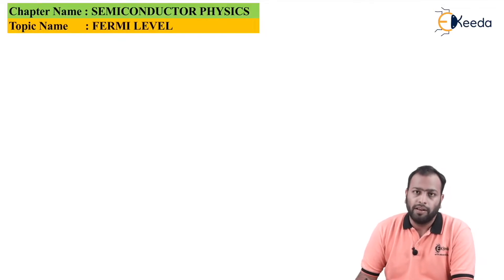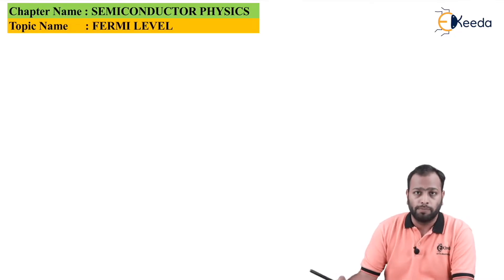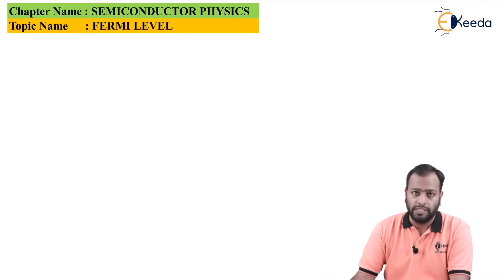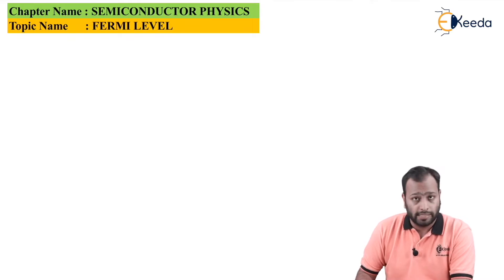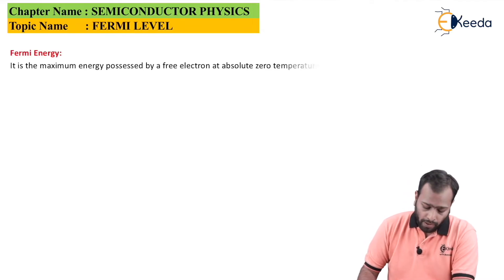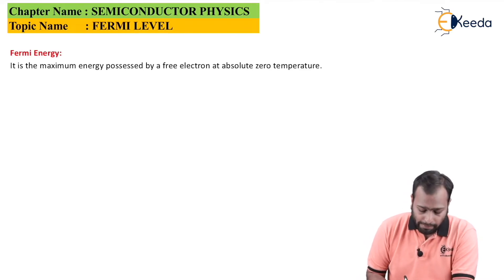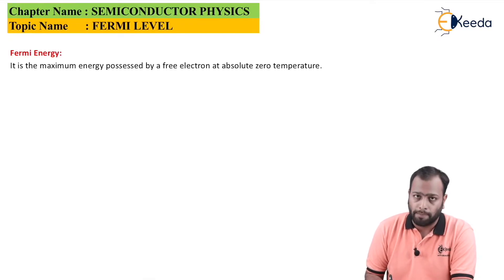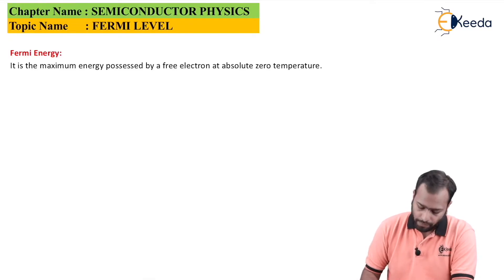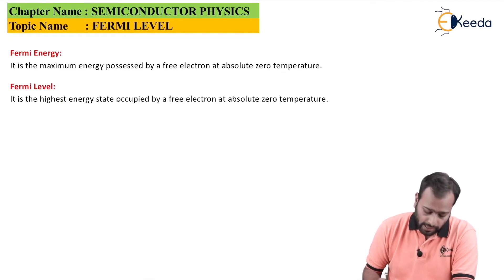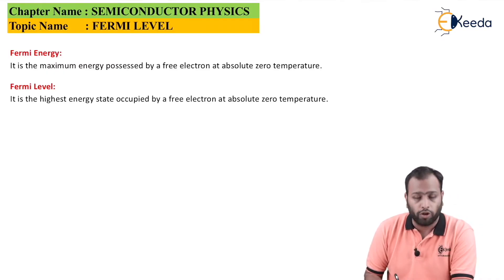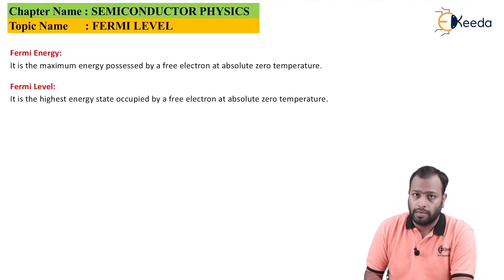Before starting Fermi level, we must know what Fermi level and Fermi energy actually are. It is most important to distinguish between these two terms. Fermi energy is the maximum energy possessed by a free electron at absolute zero temperature, whereas Fermi level is the highest energy state occupied by a free electron at absolute zero temperature.